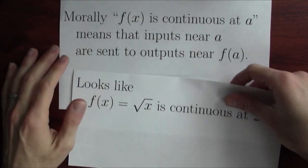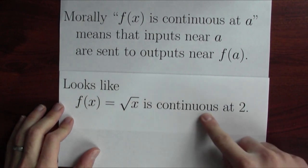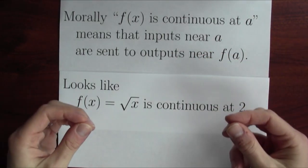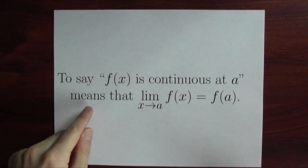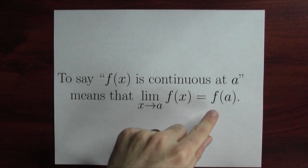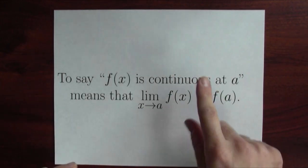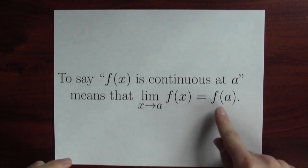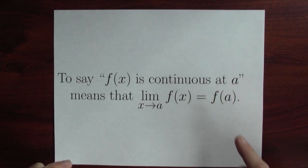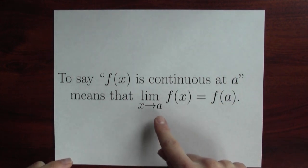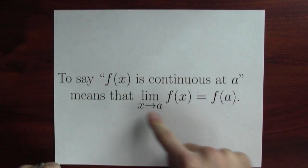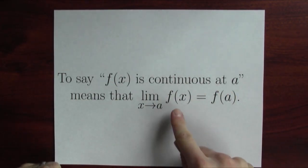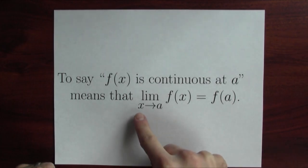From this perspective, it looks like the function f of x equals the square root of x is continuous at 2, because inputs near 2 are being sent to outputs near the square root of 2. How do we make this intuition a little bit more precise? Here is a precise definition: to say that f of x is continuous at a is to say that the limit of f of x as x approaches a is equal to f of a. Think back to what we mean by limit — I can make f of x as close to f of a as you like, as long as x is close enough to a. But that's really the spirit of continuity: nearby inputs are sent to nearby outputs, and this limit statement captures that sense.